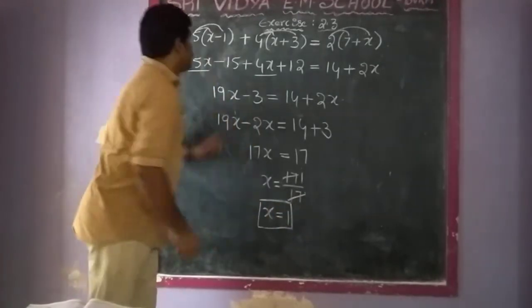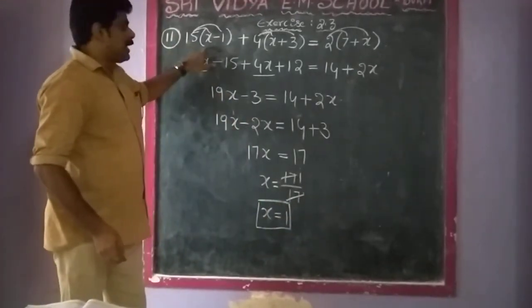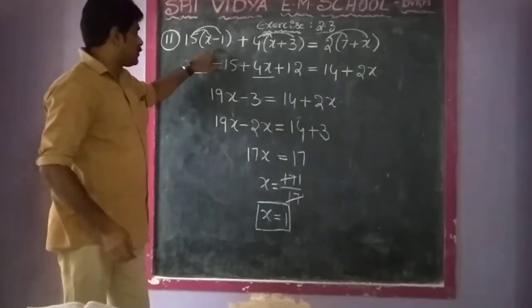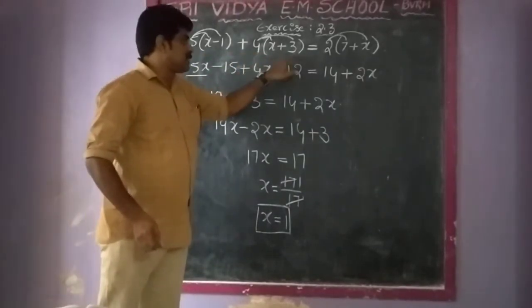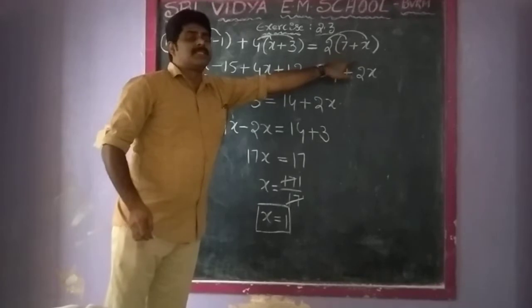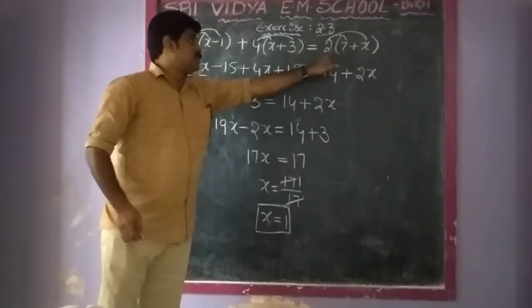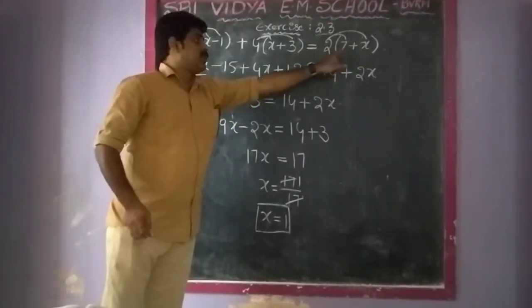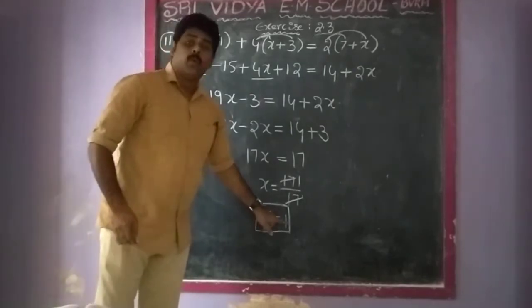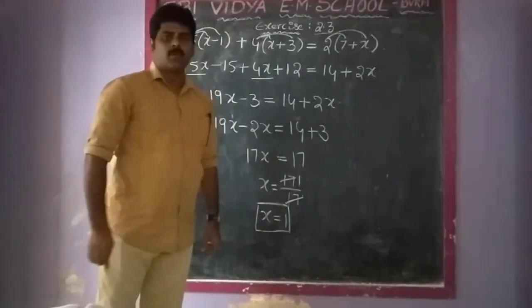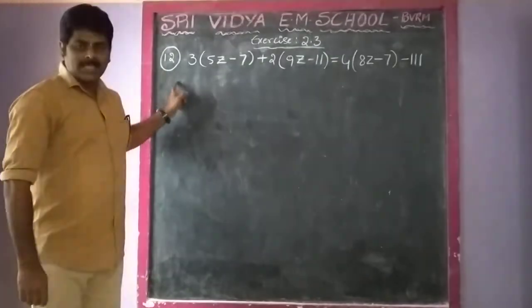Therefore the value of x: 15(x minus 1) plus 4(x plus 3) equals 2(7 plus x), and x is equal to 1. Next, Sum 12.